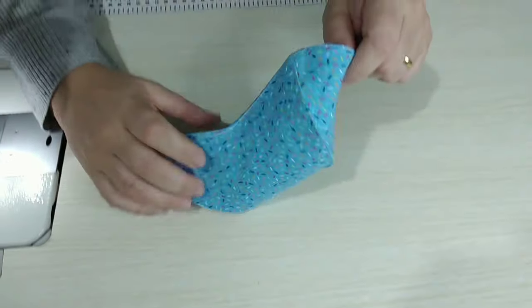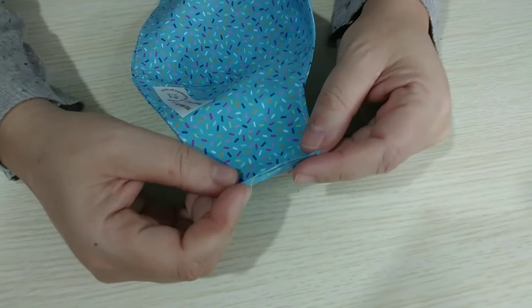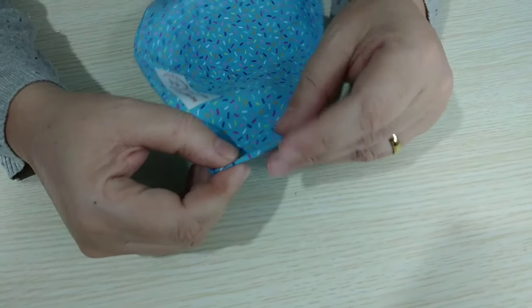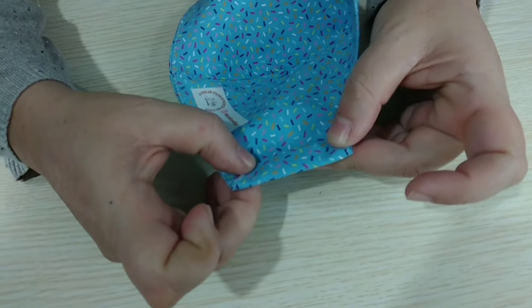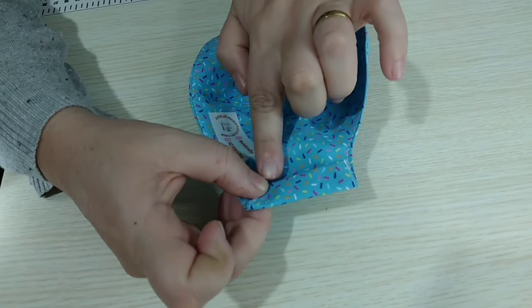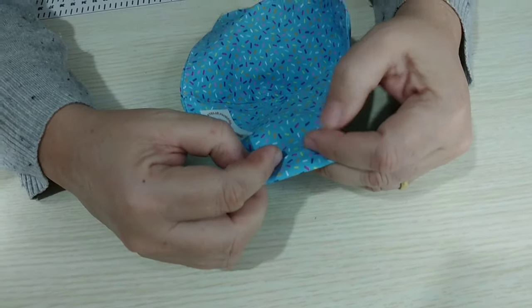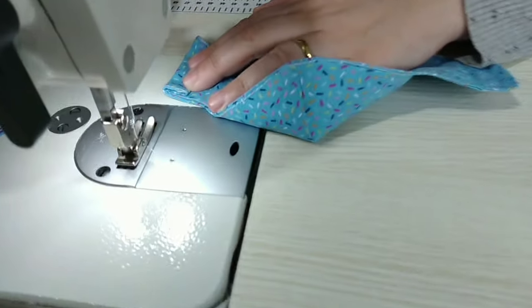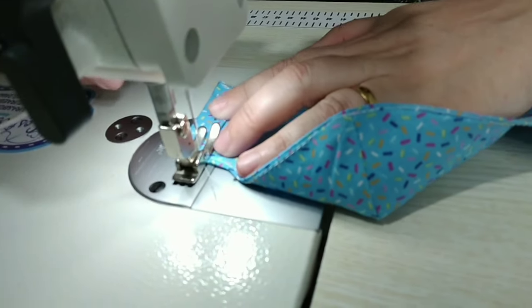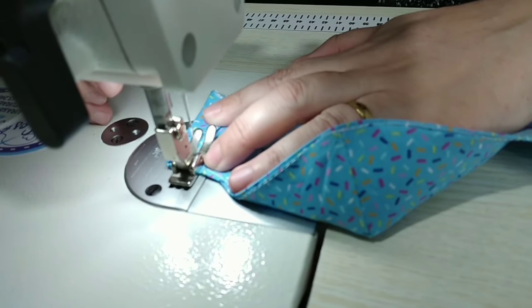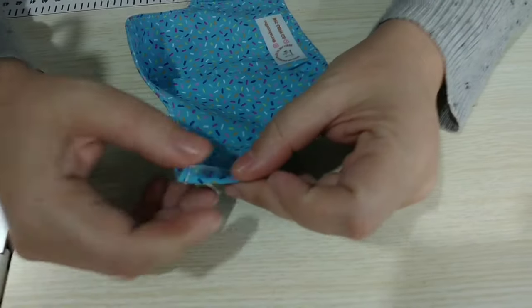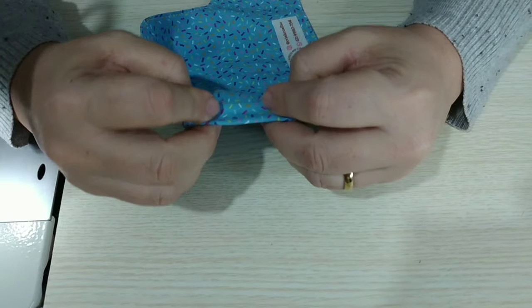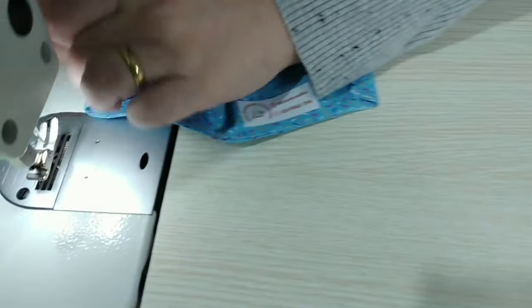Já fiz a costurinha na beiradinha. Agora a gente vai pegar aqui essa lateral, dobra assim meio centímetro e depois dobra mais ou menos um centímetro, um centímetro e meio para fazer essa canaleta aqui. E aí vamos passar uma costura bem aqui na beiradinha dos dois lados. Vou mostrar aqui para vocês na máquina. Retrocesso no começo e no final. E do outro lado também. Quando eu passei, eu já passei essa dobra aqui para ser bem tranquilinha de fazer.